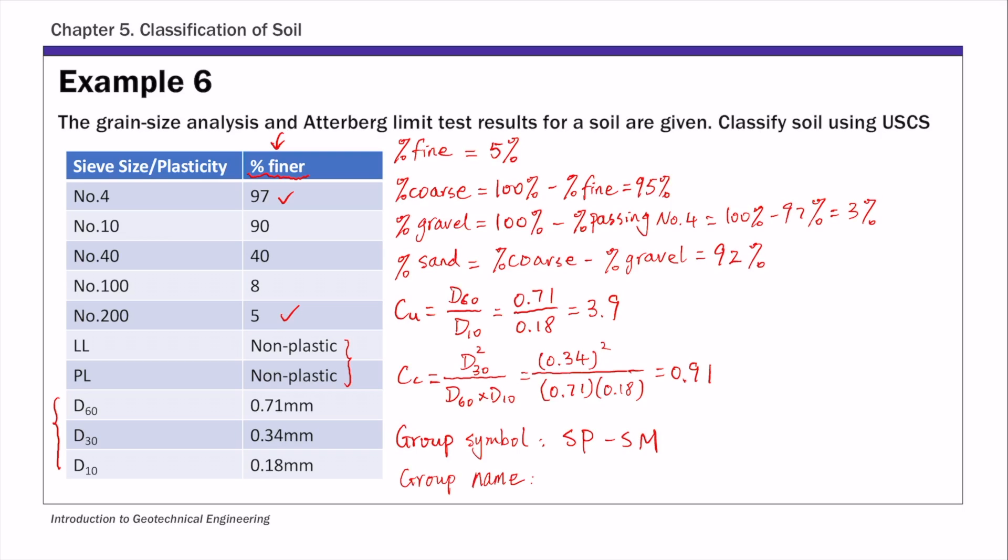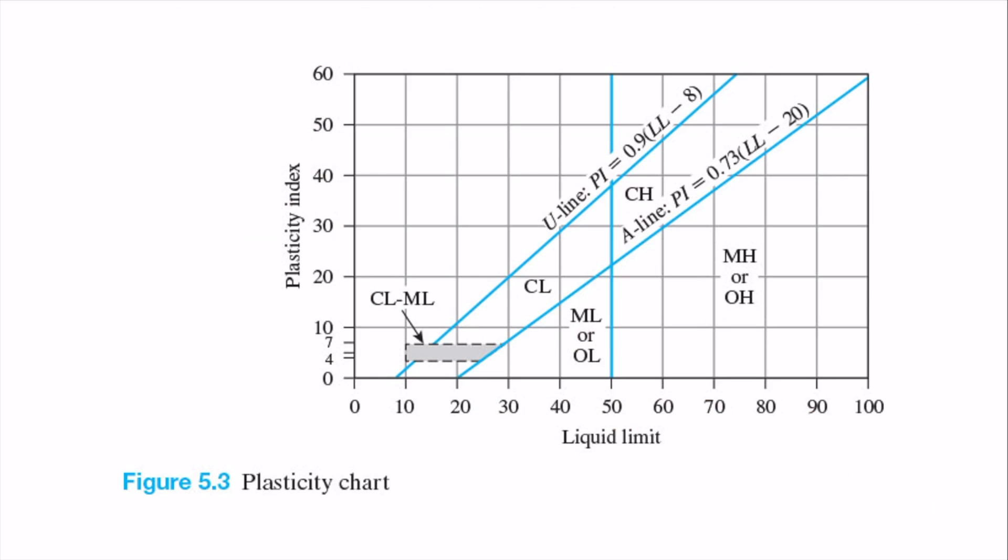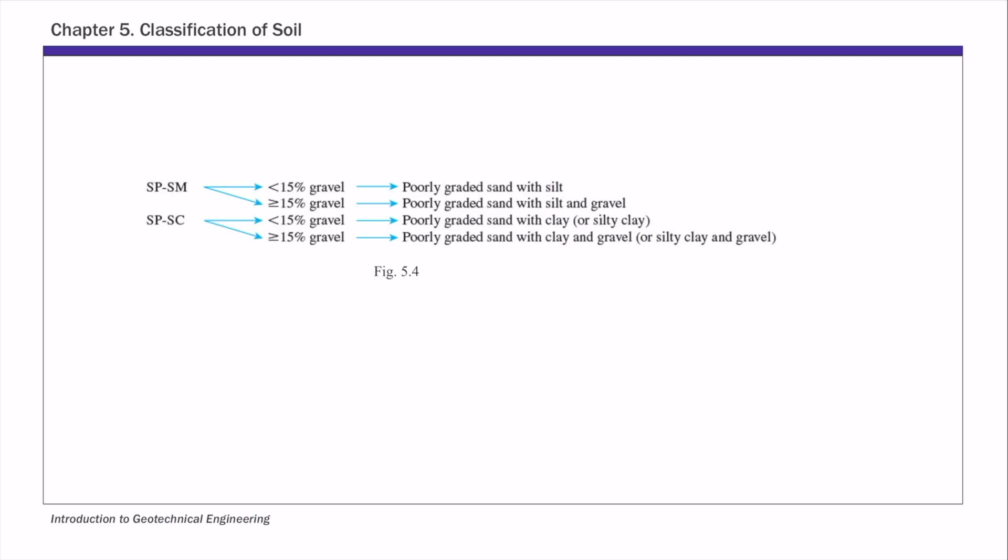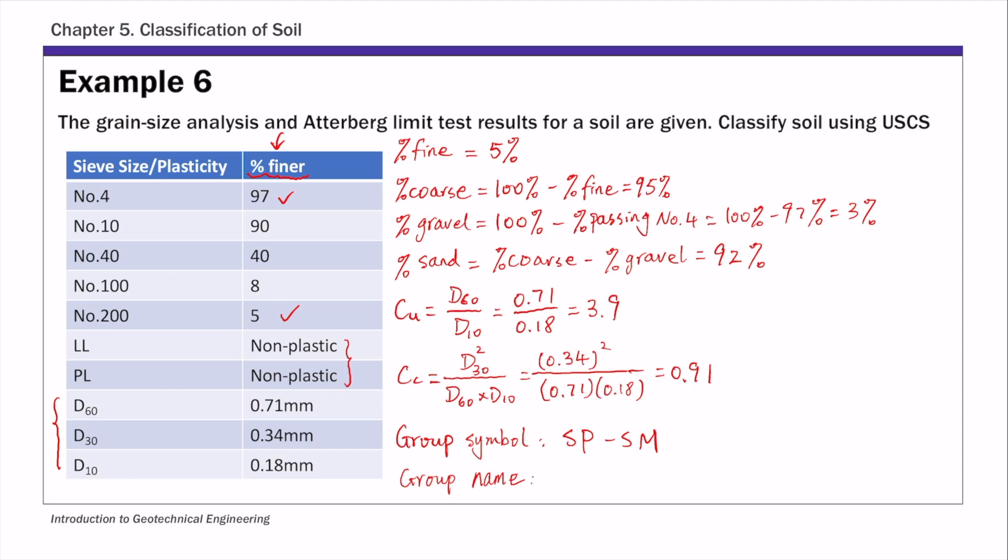Now we have the group symbol. Then for group name, we're going to use the group name figure, so for this case, figure 5.4. We know the group symbol is SP-SM. And then for this particular example, we have percent of gravel is 3%. So that means it's less than 15%. So the group name is poorly graded sand with silt.